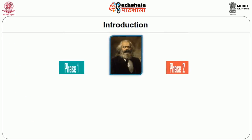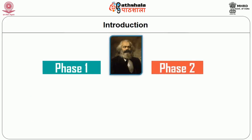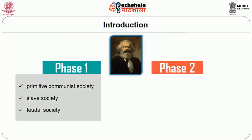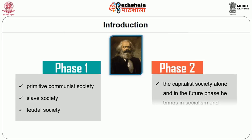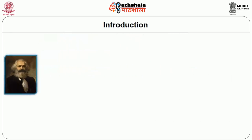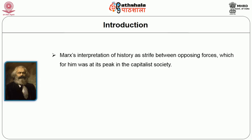Karl Marx divides these different eras of development into phases or societies. He divides the first phase into three different societies: the primitive communist society, slave society and the feudal society. The second phase takes on the capitalist society alone, and in the future phase he brings in socialism and communism. In this module we shall consider Karl Marx's interpretation of history as a strife between opposing forces, which for him was at its peak in the capitalist society.